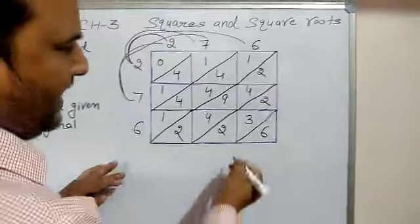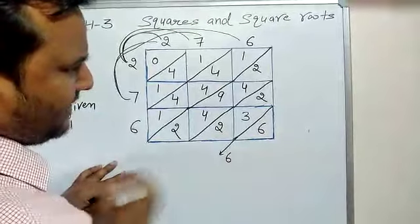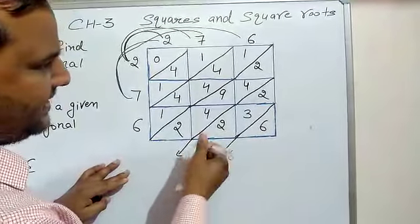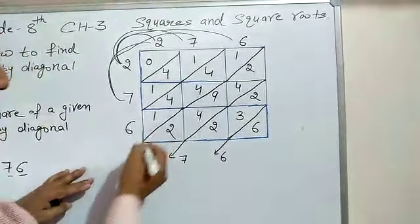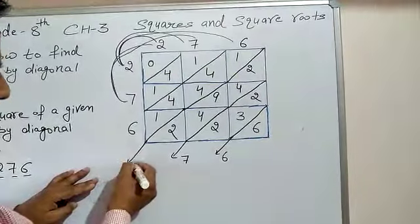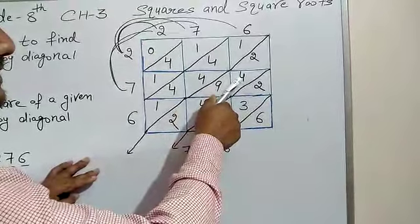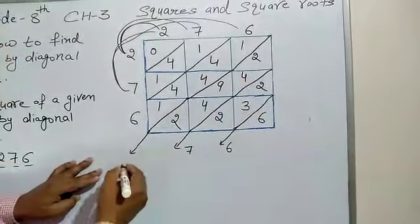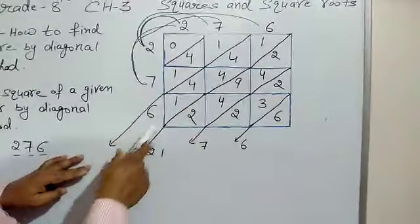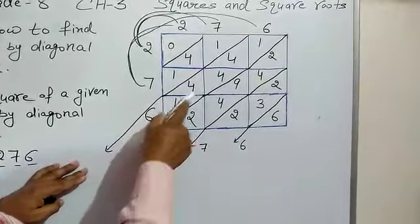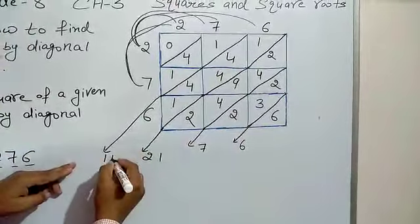Next, we write the numbers along each diagonal. On the first diagonal we have 6, so I write 6. On the next diagonal: 2 plus 3 is 5, 5 plus 2 is 7, so I write 7. On the next diagonal: 2 plus 4 is 6, 6 plus 9 is 15, 15 plus 4 is 19 — continuing the addition gives us 14 with carry, so I write 14.